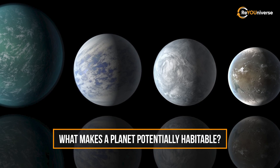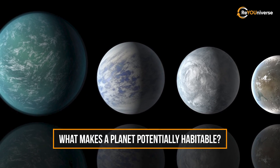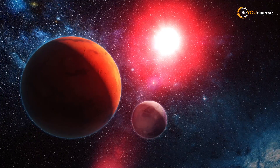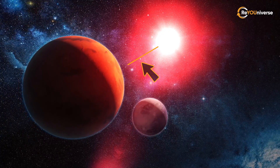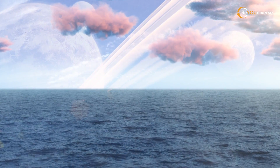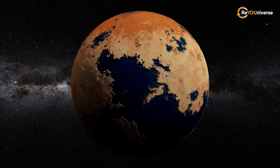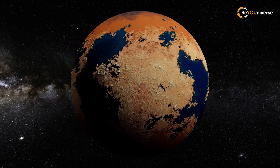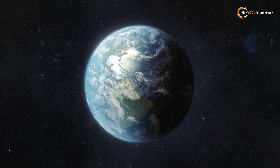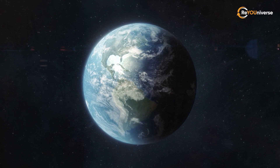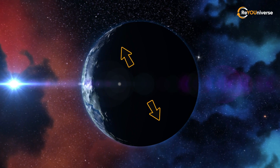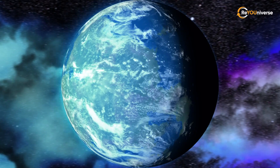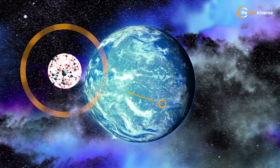But what makes a planet potentially habitable? Astronomers define potentially habitable planets as those located at such a distance from their star that would allow them to have liquid water. Even though water is the main predeterminer of the existence of life, there are other requirements. In order for complex life to evolve, a planet needs to be protected from space radiation by its atmosphere and magnetic field, as well as to have the right chemical ingredients conducive to life.